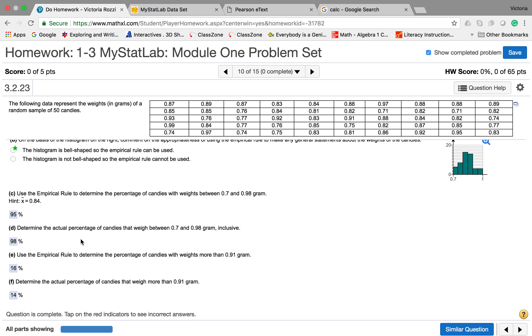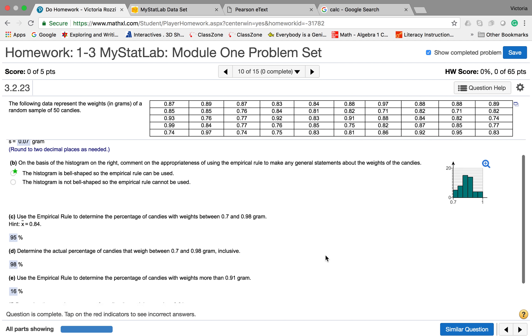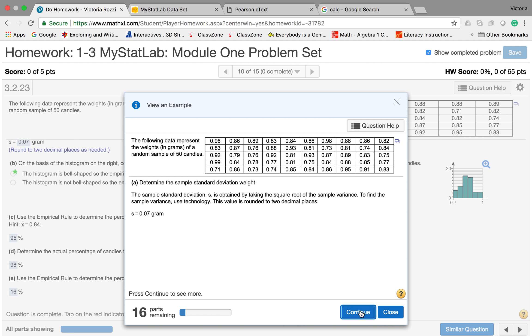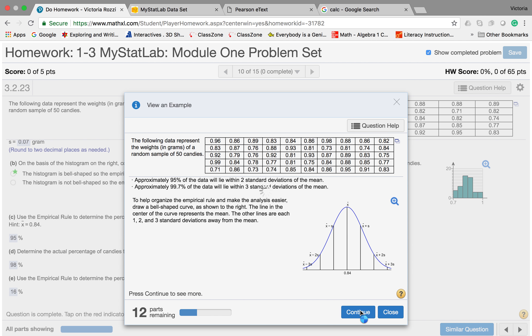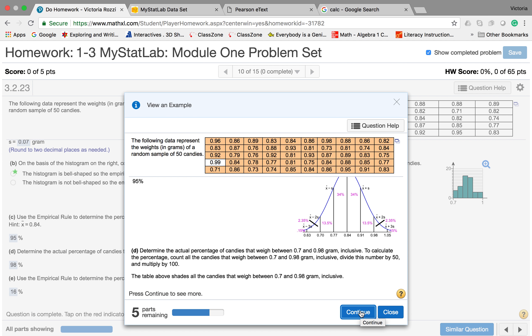Now to get the next one, it's saying determine the actual percentage of candies that weigh between 0.7 and 0.98. The actual percentage is a little bit different than the empirical rule percentage. They're actually going to go ahead and take a look at the data itself. To determine the actual percentage of candies that weigh between 0.7 and 0.98, they want you to go ahead and actually count all the candies that weigh between 0.7 and 0.98, and then divide that number by 50 because that's how many you have.